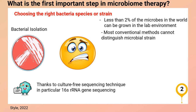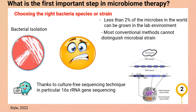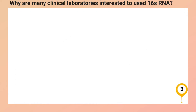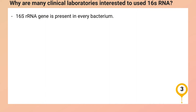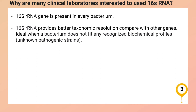The 16S rRNA sequencing technique has become the gold standard to capture unculturable bacteria without necessarily needing to grow them. 16S rRNA is a small subunit ribosomal RNA gene and is used as a tool to identify bacteria at the species and even strain level. Many clinical labs are interested in using the 16S rRNA gene primarily because it is present in every bacterium and is conserved across all microbiomes. It provides better taxonomic resolution compared with other genes, and these features are especially powerful when a bacterium does not fit any recognized biochemical profiles — meaning an unknown pathogenic strain.